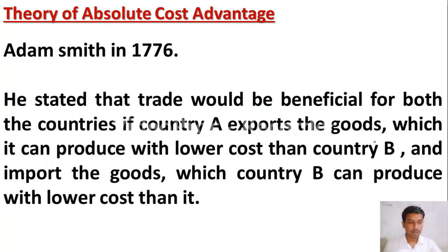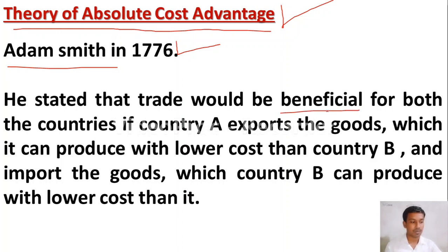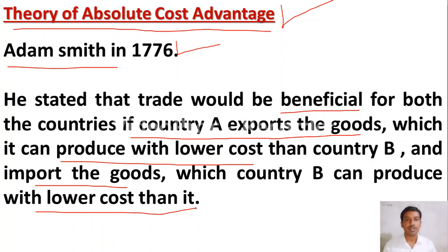The second theory is the Theory of Absolute Cost Advantage, given by Adam Smith in 1776. Adam Smith said that trade would be beneficial for both countries if Country A exports goods it can produce at lower cost than Country B, and Country B exports goods it can produce at lower cost than Country A. A country should export low-cost goods and import goods that are costly to produce domestically.